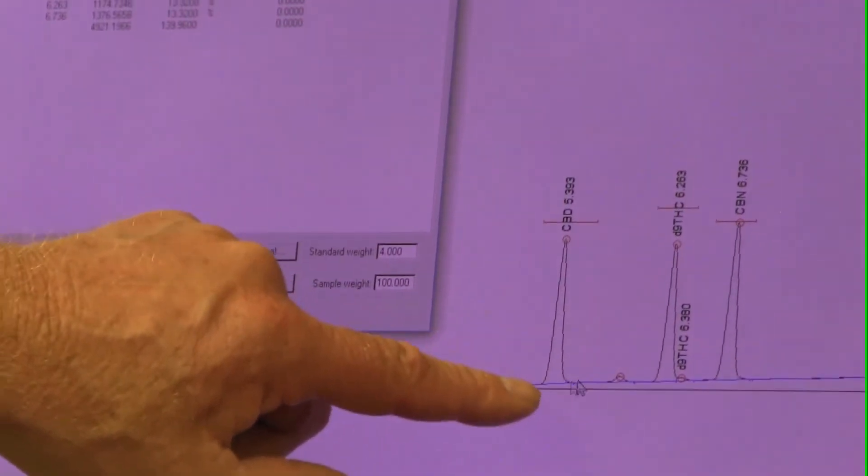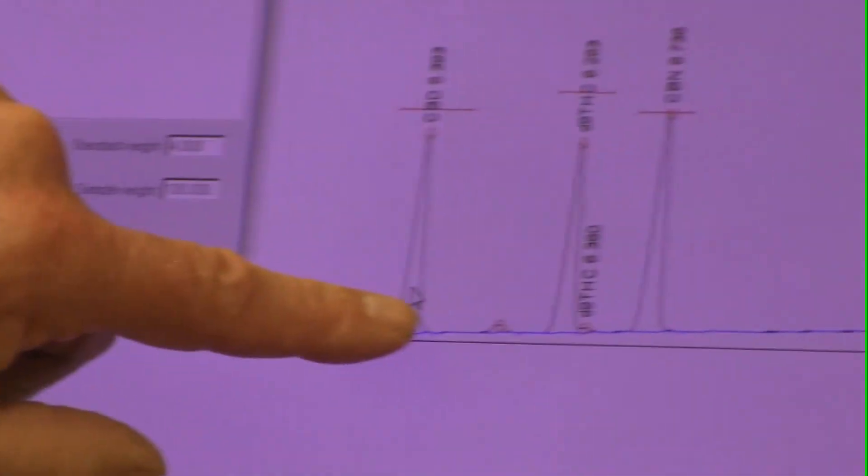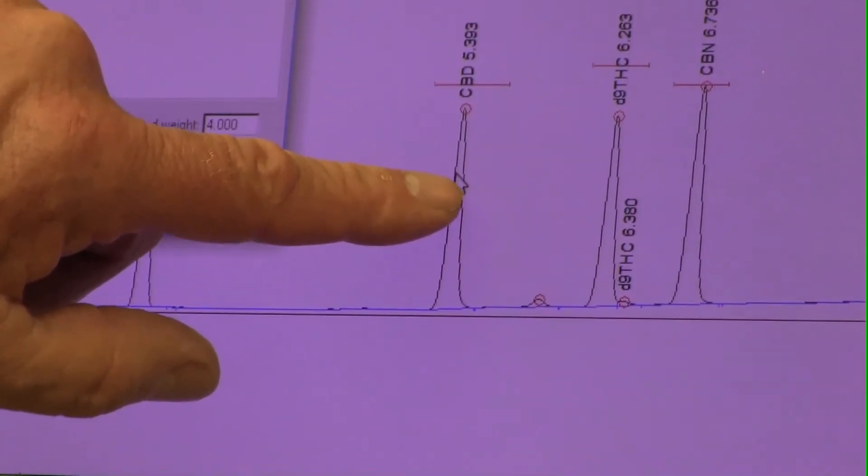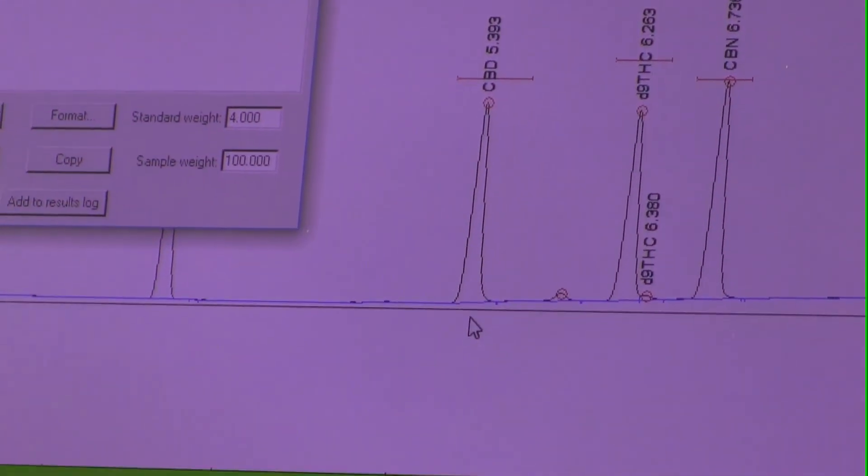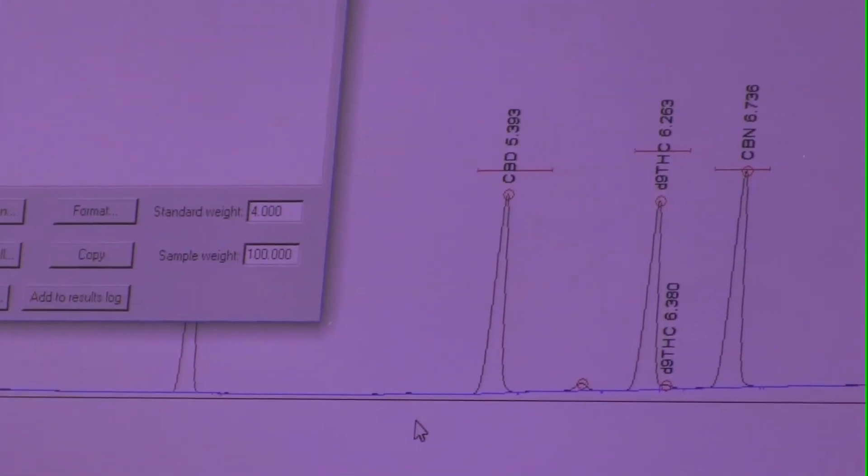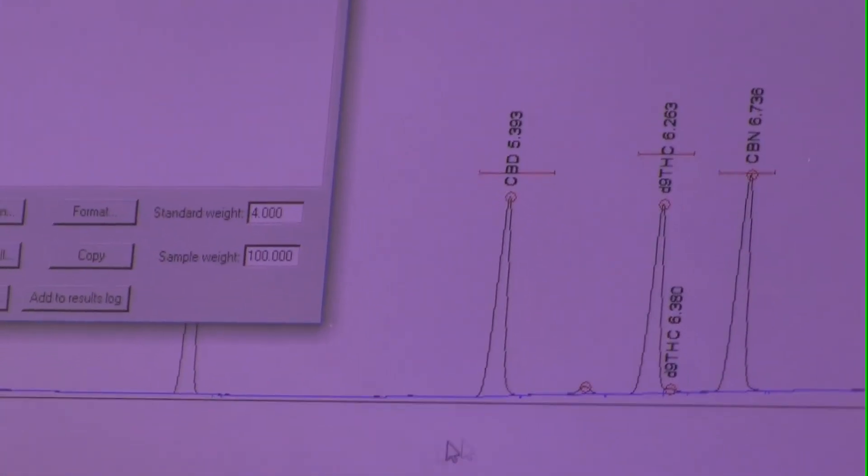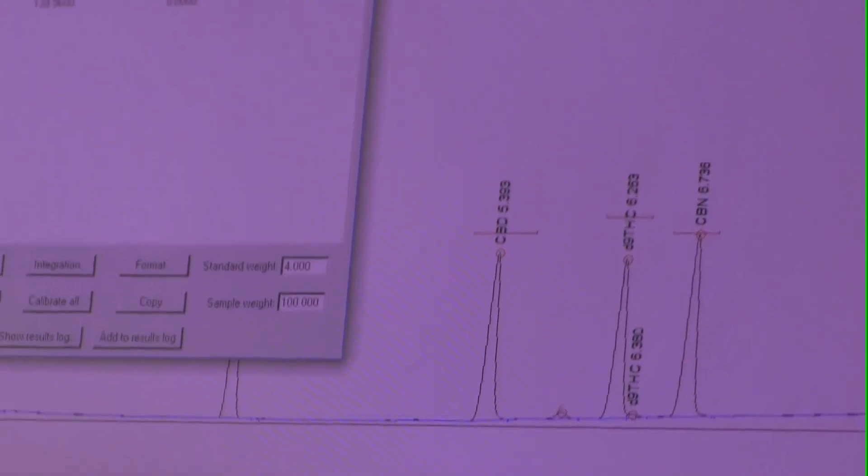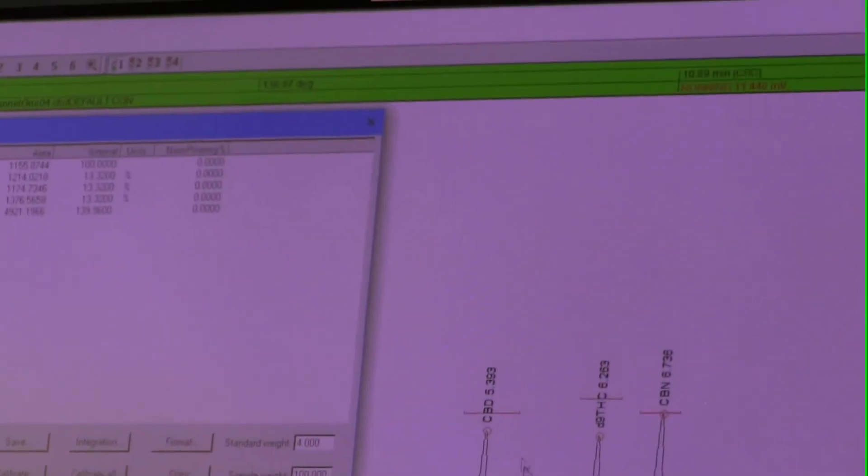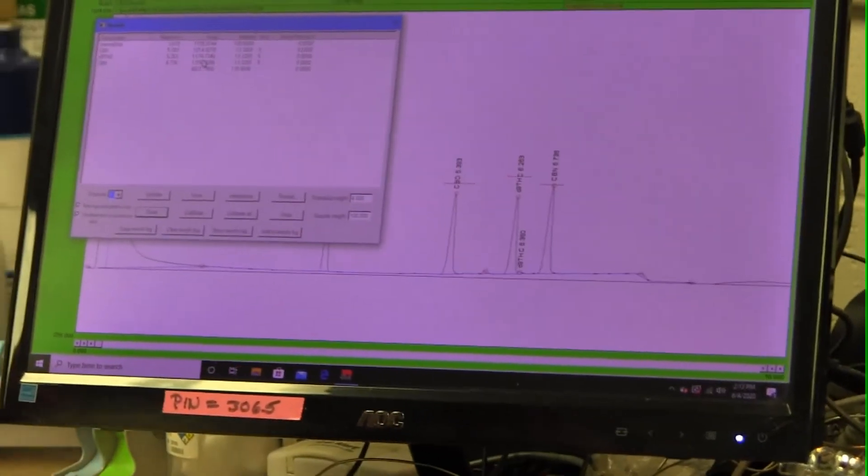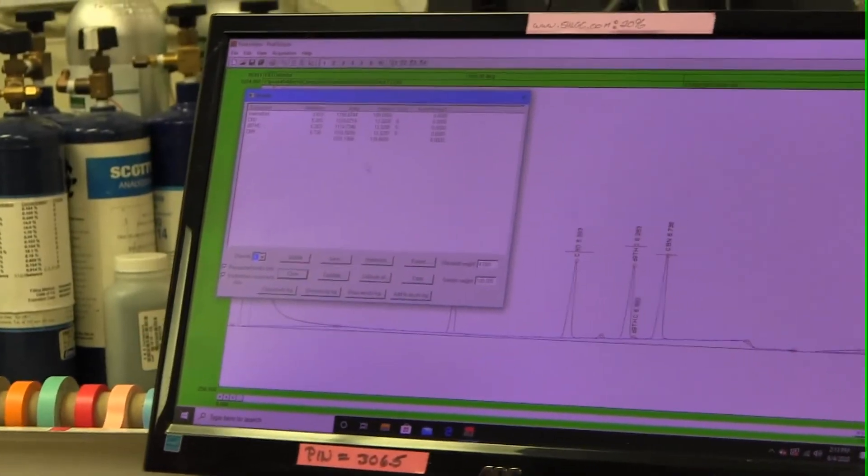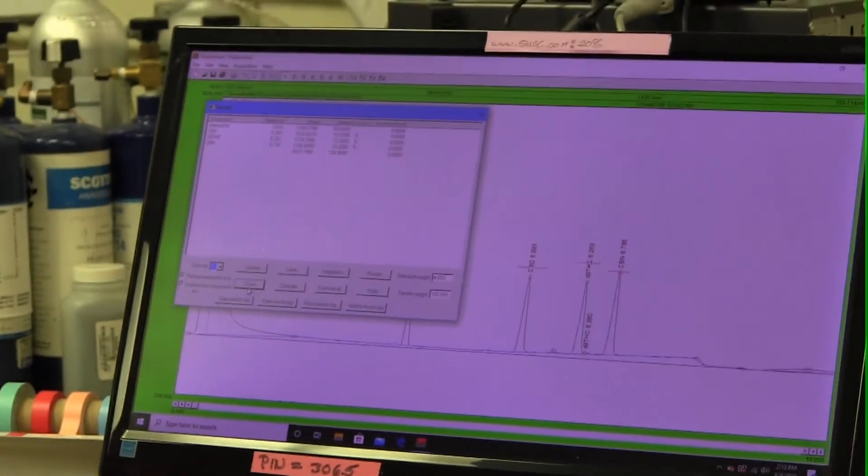So the software does that. That's called the process of integration, where it adds up the area under the peak. And that came out to be 1,214. And in the case of the THC, it came out to be 1,174, pretty close. And then CBN, a little bit bigger, 13. Whatever it is, it is, you have to calibrate to that.